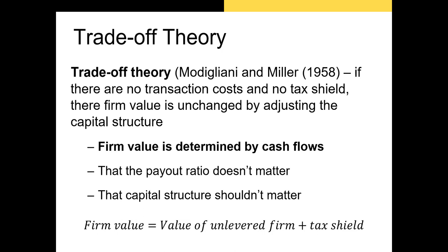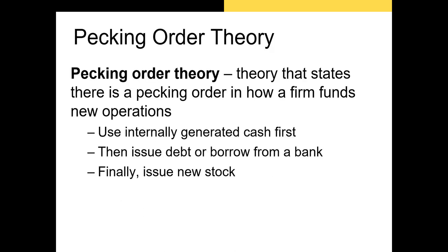That's the big takeaway of trade-off theory: lever up. The next theory we have is pecking order theory. Pecking order theory implies that there should be a pecking order that determines how a firm raises new capital it invests. The reason for this is because internally generated cash has no cost, while issuing new securities comes with a cost.